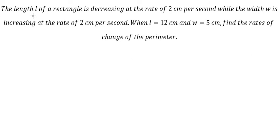Now I will show you how to answer this problem. The length L of a rectangle is decreasing at a rate of 2 centimeters per second, while the width W is increasing at the rate of 2 centimeters per second. When L equals 12 centimeters and W equals 5 centimeters, find the rate of change of the perimeter.